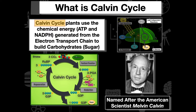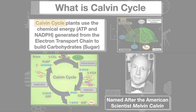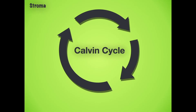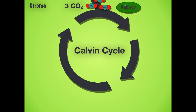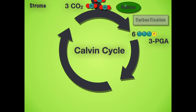Looking at the Calvin cycle in the stroma, we see an input of three CO2. The carbon from CO2 serves as the building block for creating sugars — remember sugar is C6H12O6. Using the enzyme rubisco in an enzyme-catalyzed reaction, we make the first intermediate: three PGA, which consists of three carbon groups and a phosphate.